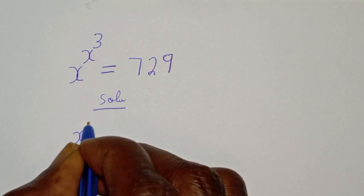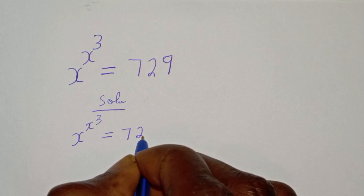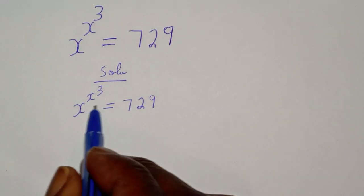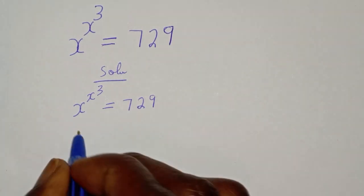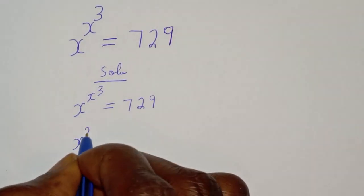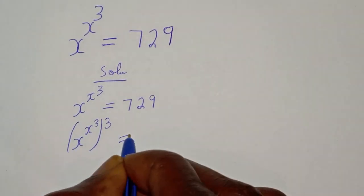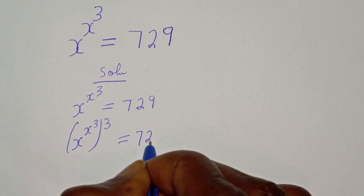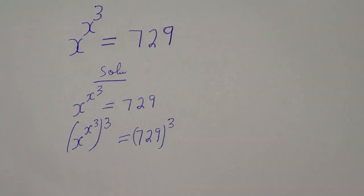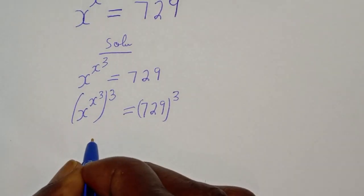Solution: s raised to the power s raised to the power of 3 is equal to 729. Let's take both sides to the power of 3. That is, s raised to the power s raised to the power 3, all to the power of 3, is equal to 729 to the power of 3.